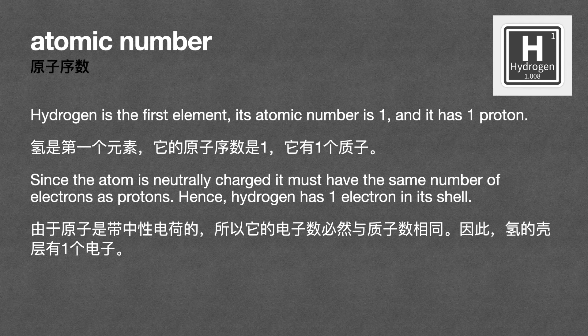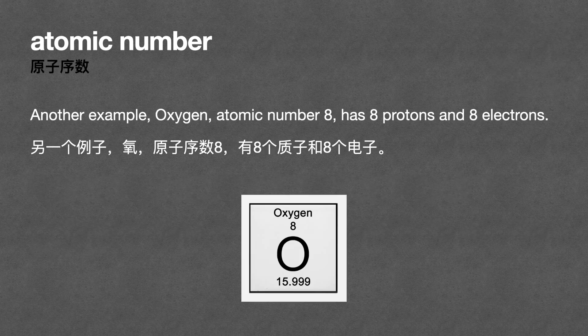Since the atom is neutrally charged, it must have the same number of electrons as protons. Hence, hydrogen has 1 electron in its shell.